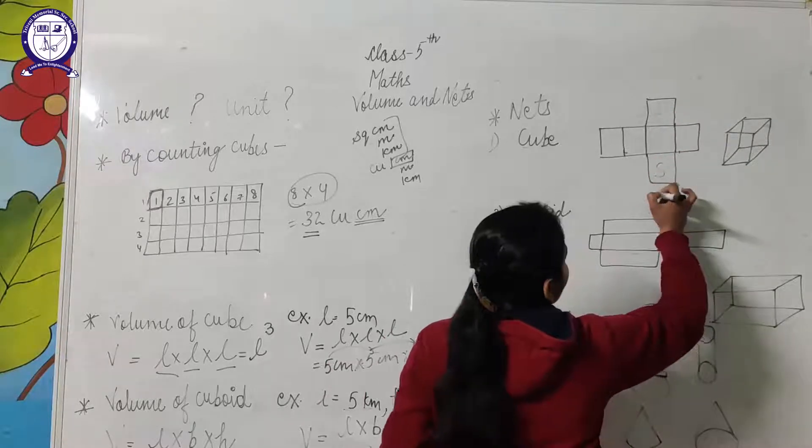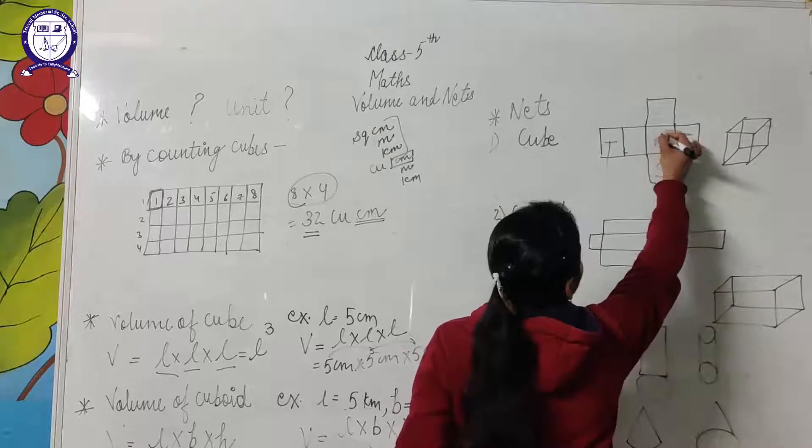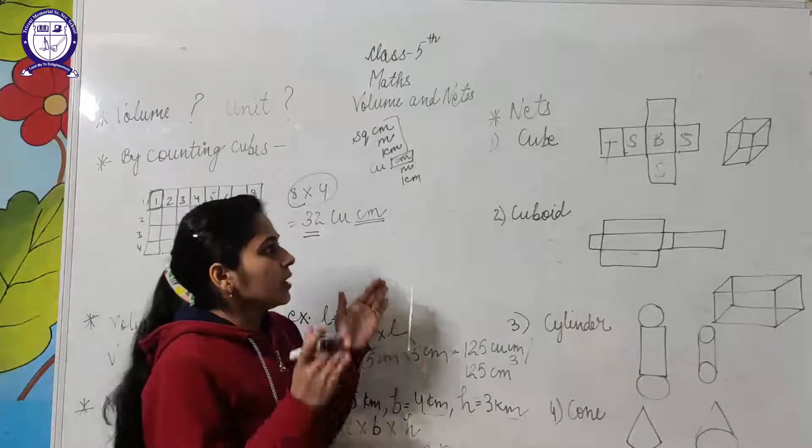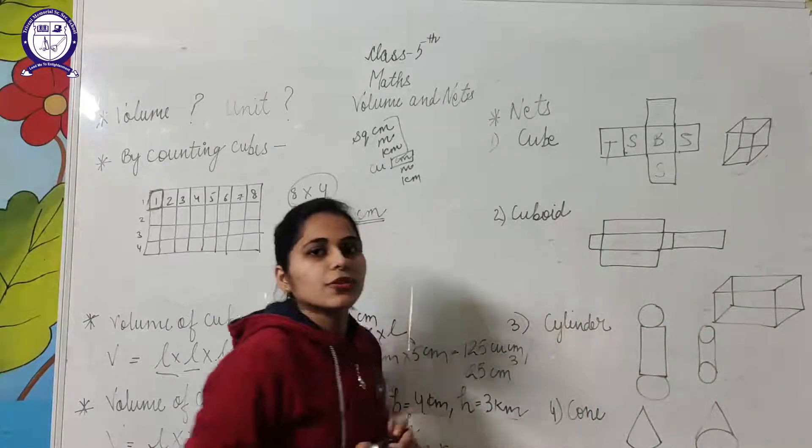This can be a side view, this can be a side view, this will be a side view, this will be a top view, and this will be a bottom view. And this will be a side view. When we close this, we will get a figure like this. This is the figure of a closed cube.